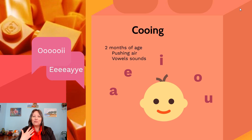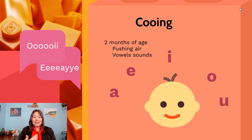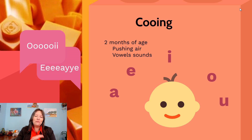In the first two months of life, infants don't really produce phonemes yet. When newborns make noise, they're not using their vocal cords — it's more the pushing of air, with very little vocal cord stimulation.